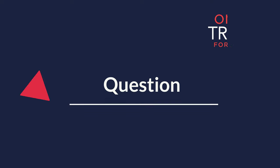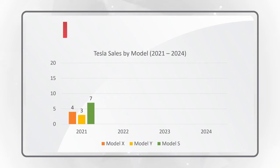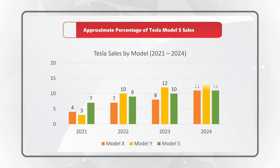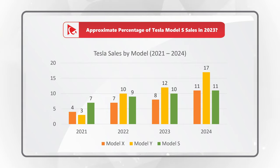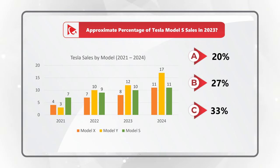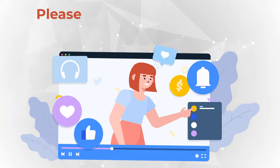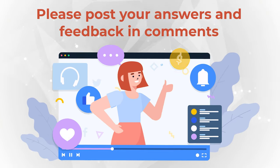Now I think it's an excellent time for you to try your skills. You need to determine the approximate percentage of Tesla Model S sales in 2023. You're presented with a chart showing sales by model between 2021 and 2024. You have four choices: Choice A, 20%; Choice B, 27%; Choice C, 33%; and Choice D, 40%. Give yourself a little bit of time, do the mental math, maybe pause the video. Once you're ready, please post your answer in comments so I can give you my feedback. Thanks for participating and good luck.